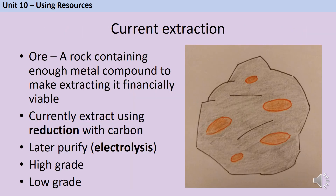Most metals are extracted from ore, which are rocks that contain enough of a metal compound to make extracting it financially viable - in other words, we can make money from it. There's no point mining rock with so little metal that after the mining and extraction process we haven't got enough metal to offset the costs. It's almost always going to be a metal compound inside the rock, because most metals react with oxygen in the air and other surrounding substances. Only very unreactive metals like gold and platinum are found as pure elements.